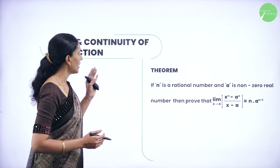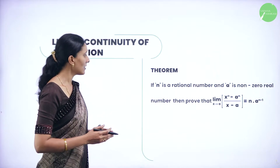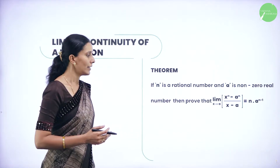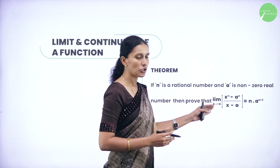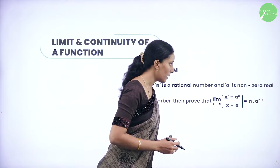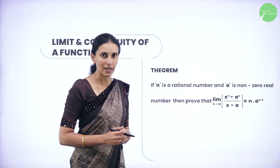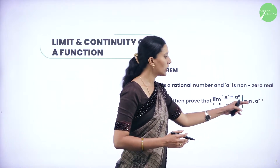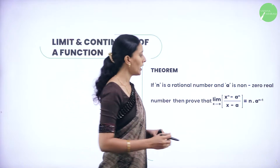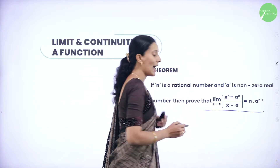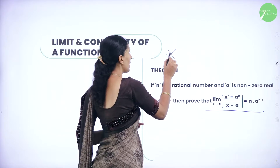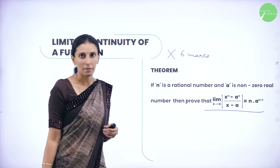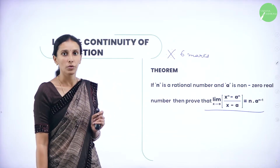So here we have the theorem. The theorem says: if n is a rational number and a is a non-zero real number, then prove that the limit of the function of the form x power n minus a power n divided by x minus a, as x tends to a, will be equal to n into a to the power n minus 1. So we have to prove this result — it is a very important question for six marks in your examination.